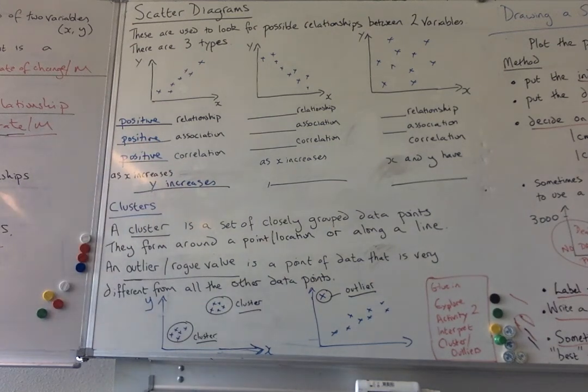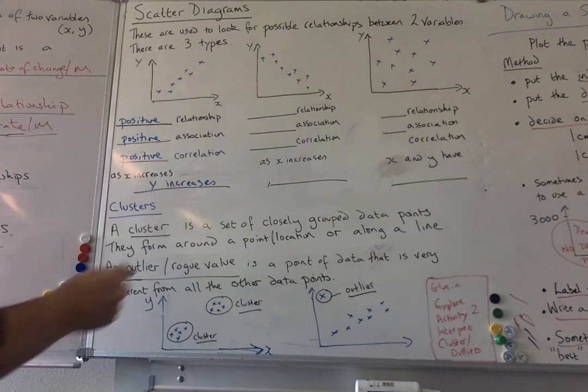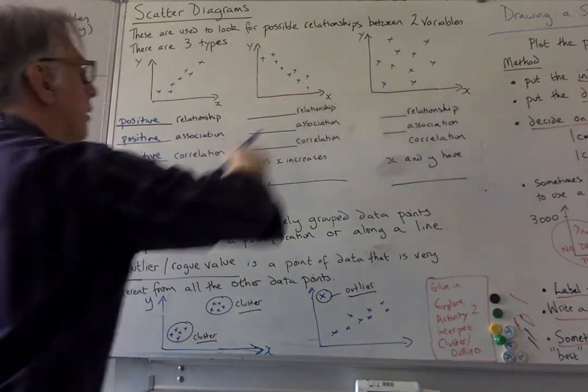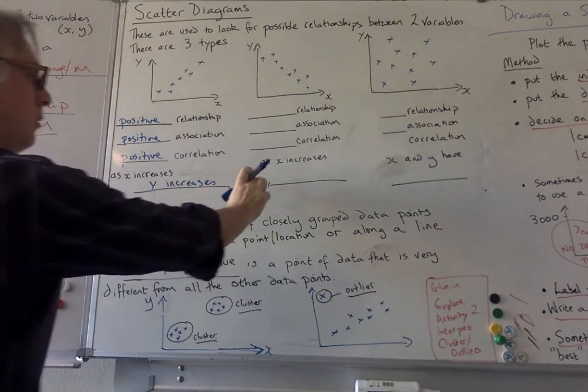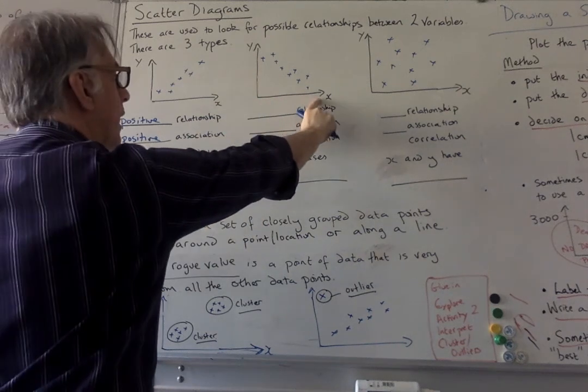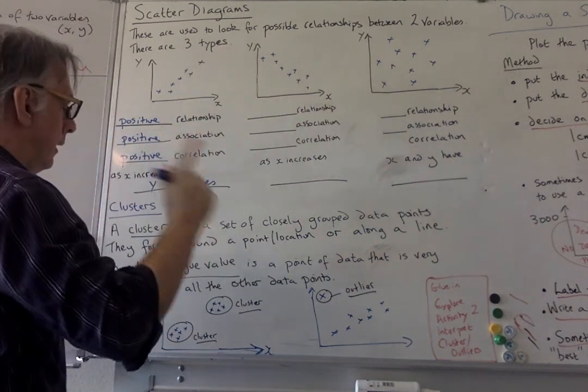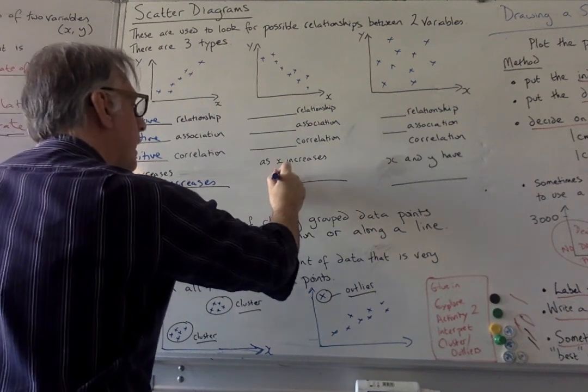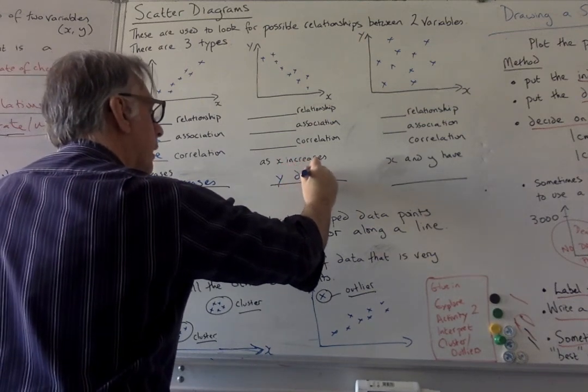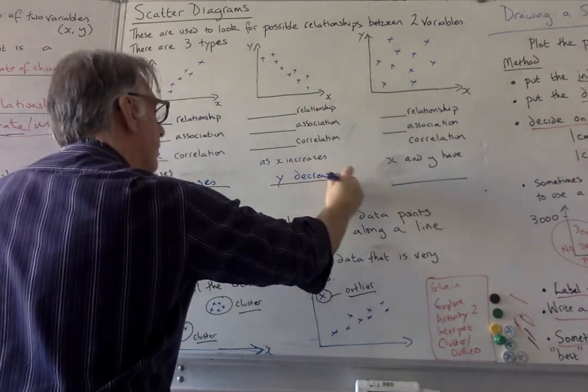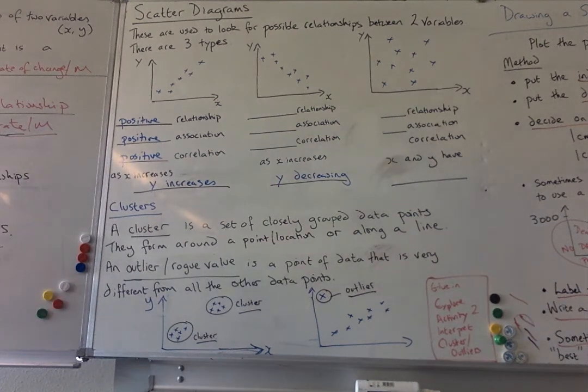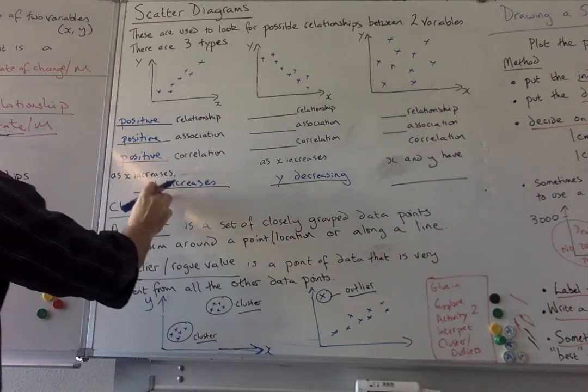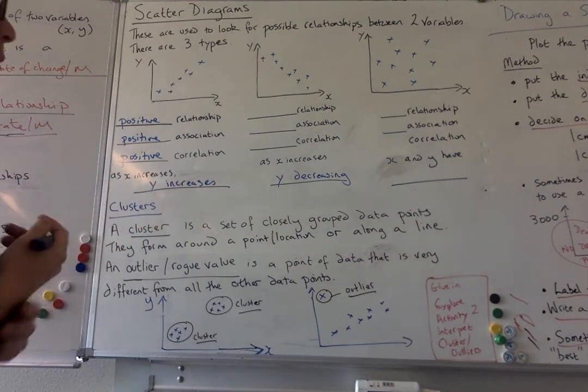Now the second one what happens as X increases here? Do you see what happens? Can you remember it from the earlier unit? The more she saw him, what happened to her love? Yeah, it decreased. So here the Y values are decreasing as the X increases. As X increases Y decreases. As X increases here Y increases. What type of relationship is that?